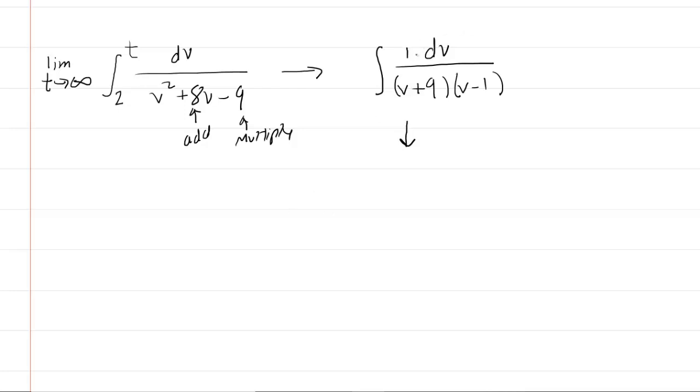Notice there is a 1 in the numerator here. So what we're going to do is just take 1 over these two factors, and we're going to decompose them into partial fractions. Notice we're not integrating right now. We're just trying to rewrite the expression, and then we'll go back and actually integrate it.